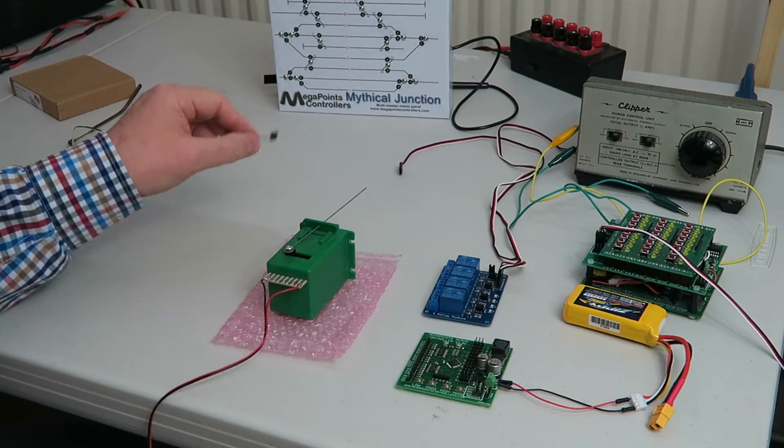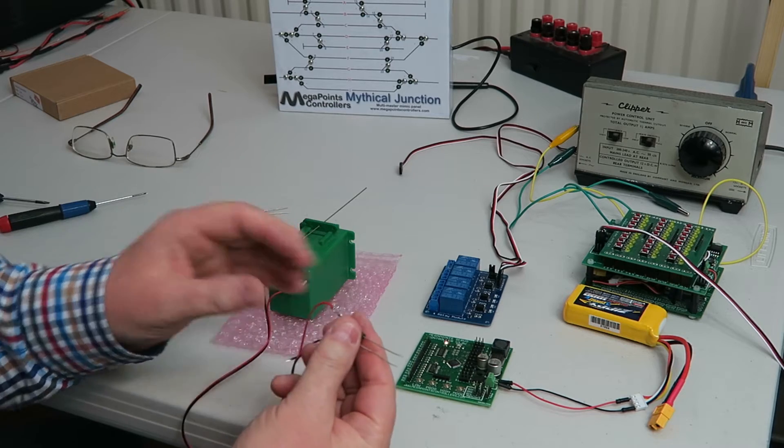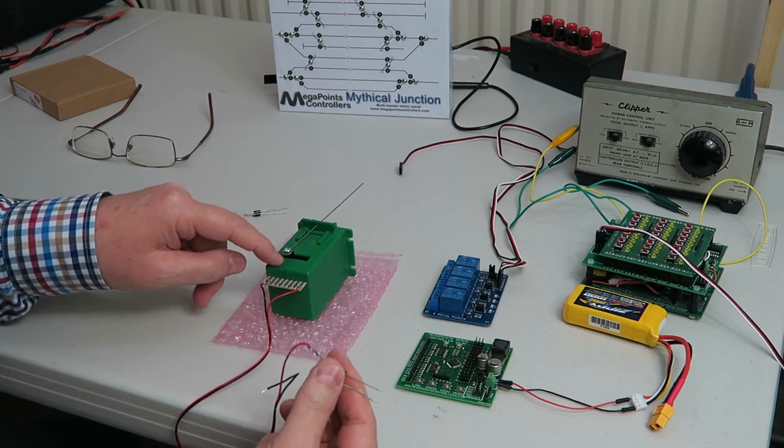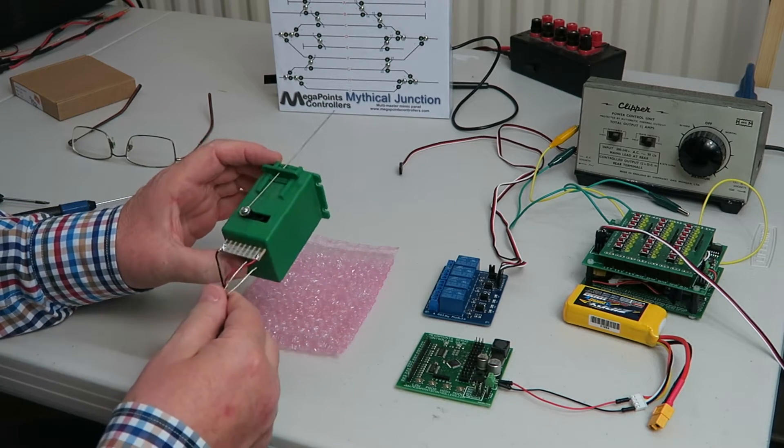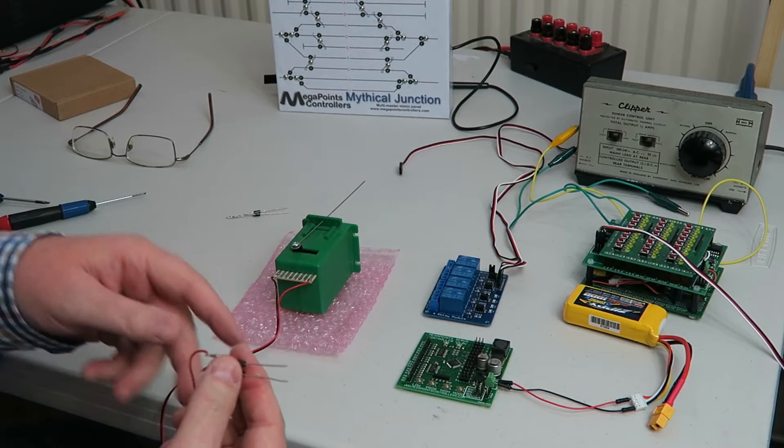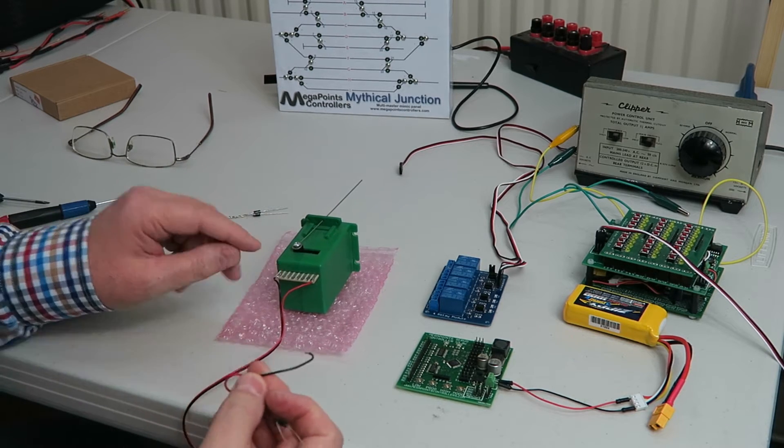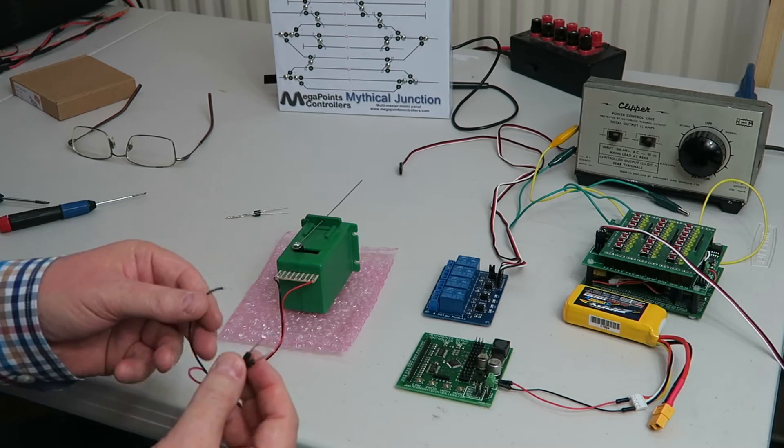Now what I've done here is I've twisted these together and I've attached one side to the switch machine on output or input number 8. The other end on the switch machine from number 1 I'll leave spare for now, I'll leave it loose.